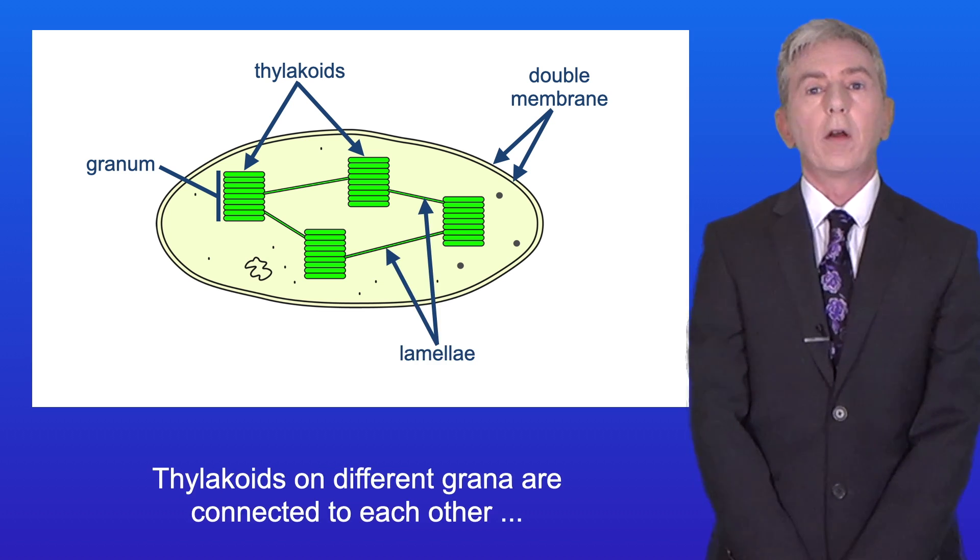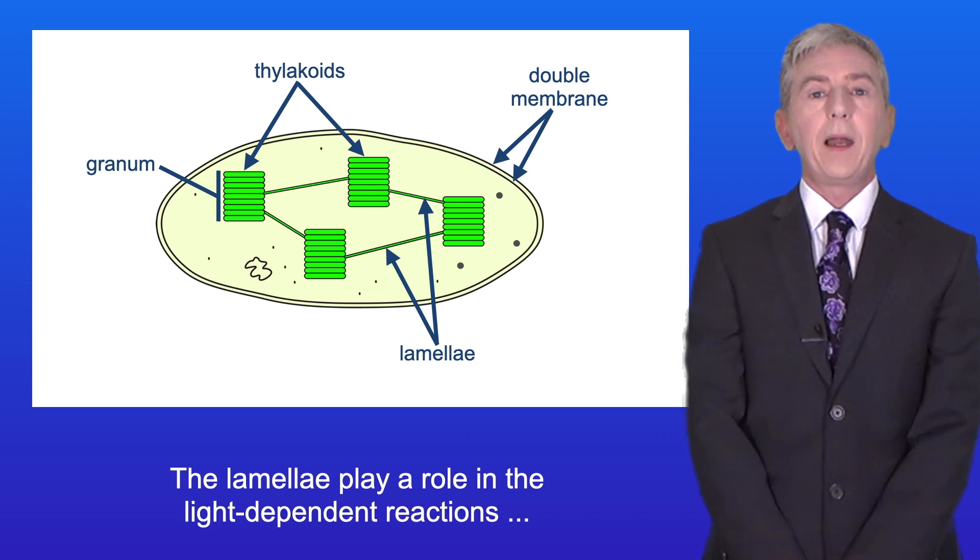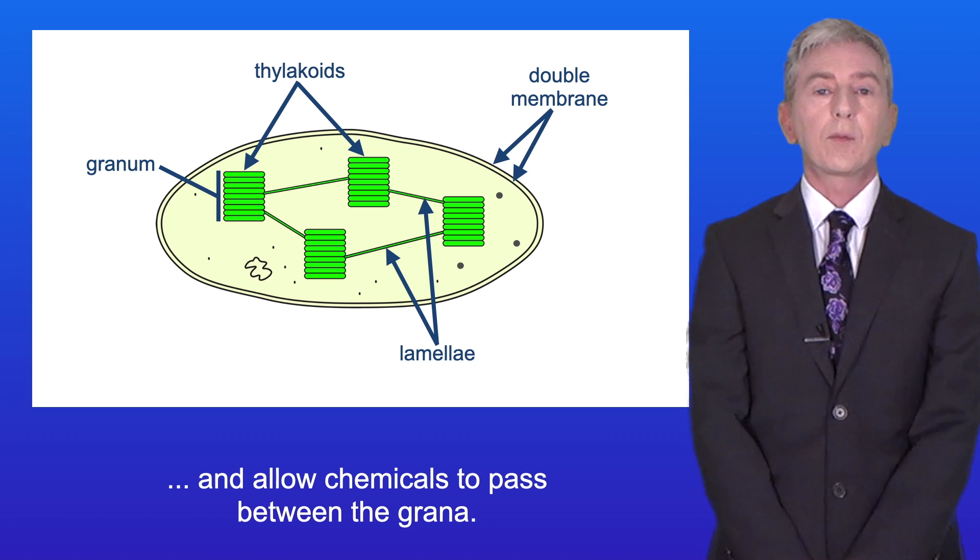Thylakoids on different grana are connected to each other by flattened membranes called lamellae. The lamellae play a role in the light dependent reactions and allow chemicals to pass between the grana.